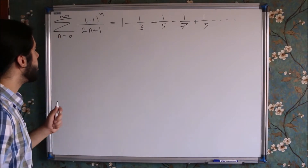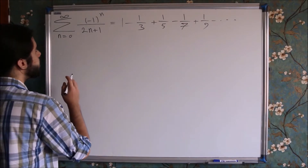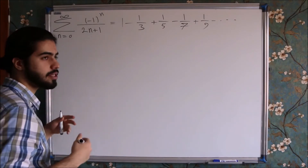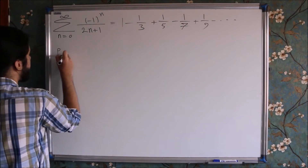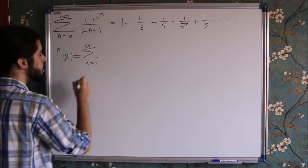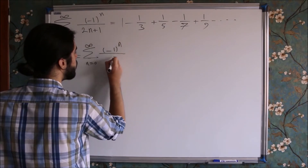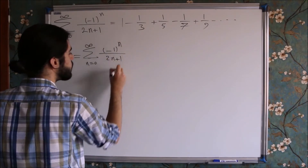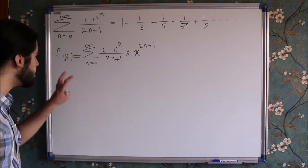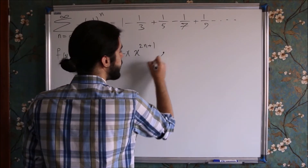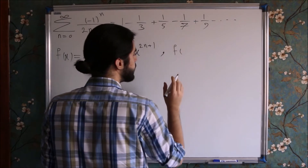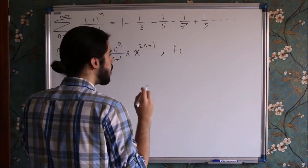Let's get into it. First I'm trying to turn this infinite series into a function in terms of x. So I can write it like f of x is equal to the sum of minus 1 to the power of n, over 2 times n plus 1, multiplied by x to the power of 2 times n plus 1. Here's the function.